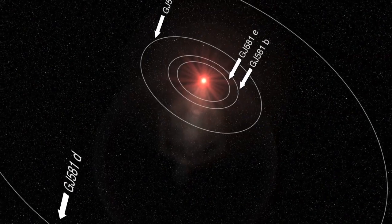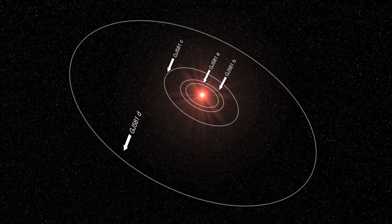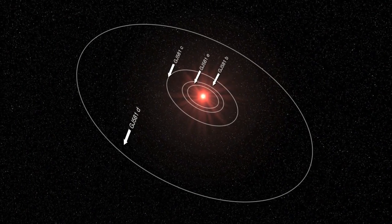The planets have masses of about 1.9 Earth masses for planet E, 16 for planet B, 5 for planet C, and 7 Earth masses for planet D.